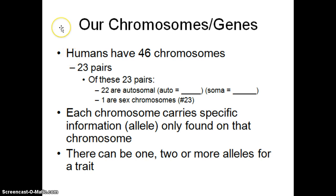Today we're going to talk about autosomal recessive and autosomal dominant diseases. We've already reviewed a lot of this background material, but it's always important to include that when you start a new topic. As a reminder, humans have 46 chromosomes and 23 pairs. Of those pairs, 22 are autosomes and one pair are sex chromosomes. The last session we did was sex-linked traits, and those genes are located on the sex chromosomes.